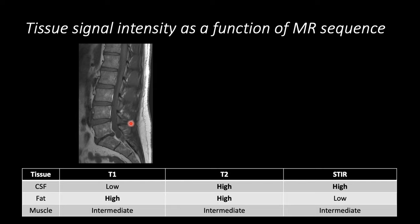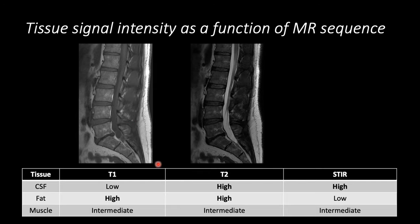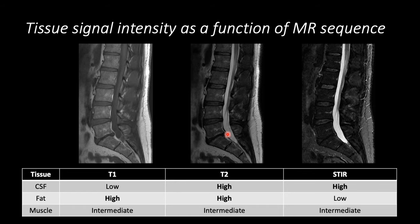Muscle is of intermediate signal intensity between CSF and fat. T2-weighted sequences are similar to T1-weighted sequences in that fat is bright in signal and muscle is relatively intermediate. However, in this sequence, CSF is bright. On the STIR sequence, the CSF remains bright. However, the signal intensity of the fat as well as the signal intensity of the bone marrow becomes dark, and this highlights areas of edema within the bone marrow.